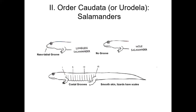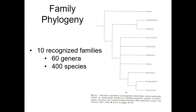Salamanders occur almost everywhere except really cold climates like Antarctica or the Arctic. They're very common in North America — in fact, there are more species of salamanders found in North America than any other continent. Most species live in cool mountainous forests. Indiana has 26 different species of salamanders, quite the diversity for a Midwestern state. There are only 10 recognized salamander families, 60 genera, representing around 400 to 450 species depending on which taxonomy you follow.